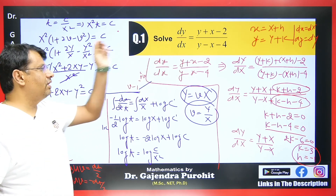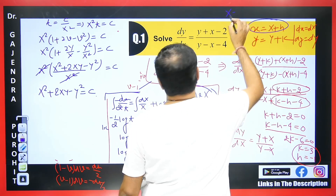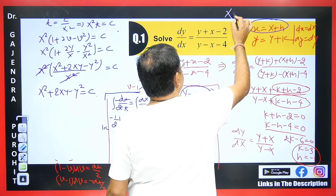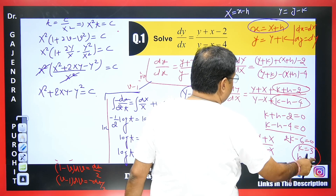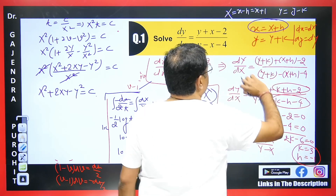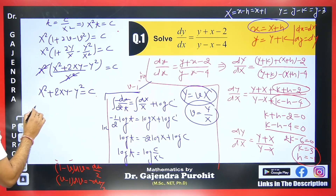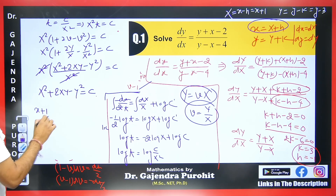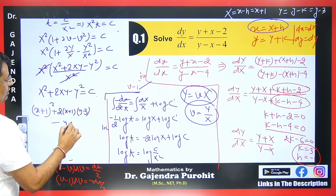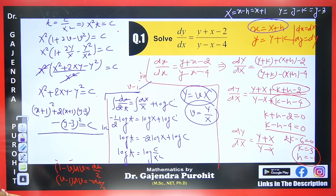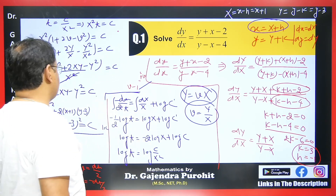So this is how we solve this question. It is a little bit lengthy, but if you do the calculation correctly you can easily solve it. Let's take another question so that you fully understand the concept. For the second example, we again assume small x = capital X + h and small y = capital Y + k, replace small letters with capital letters in the differential equation, and find h and k by setting the constant terms to zero.